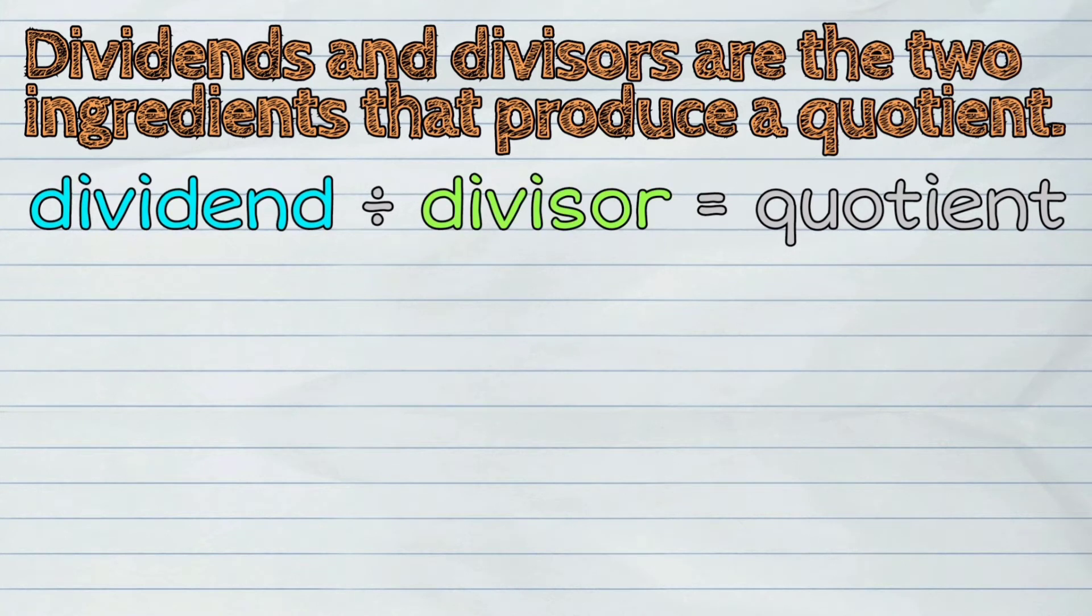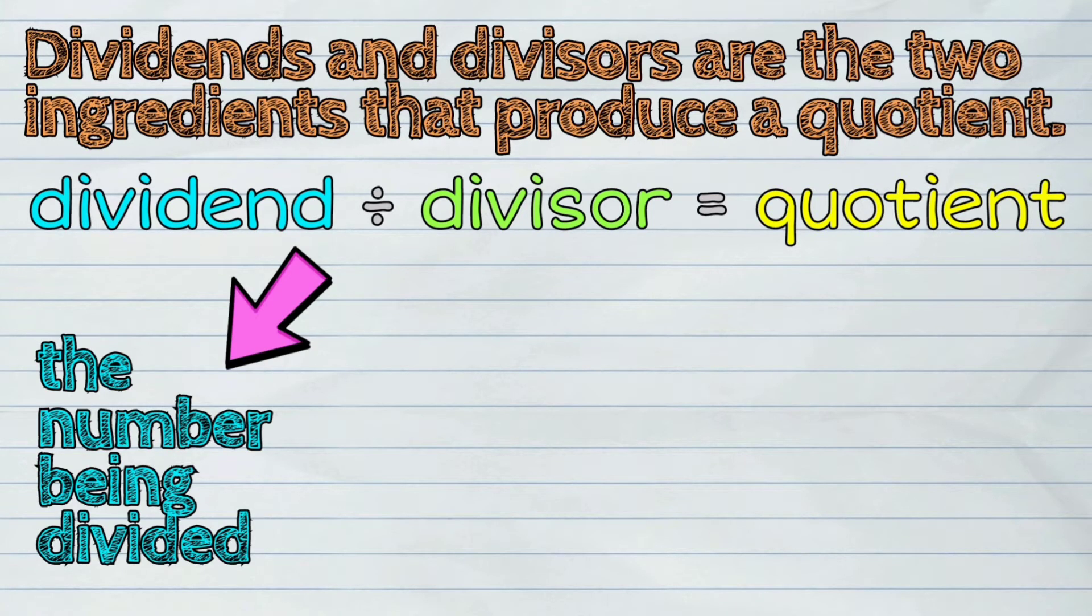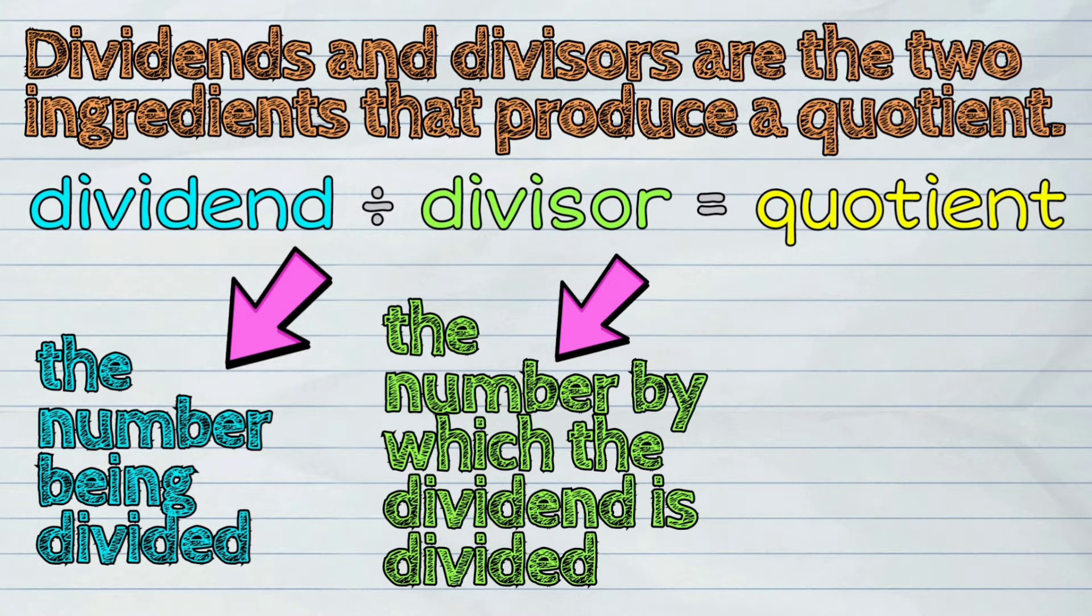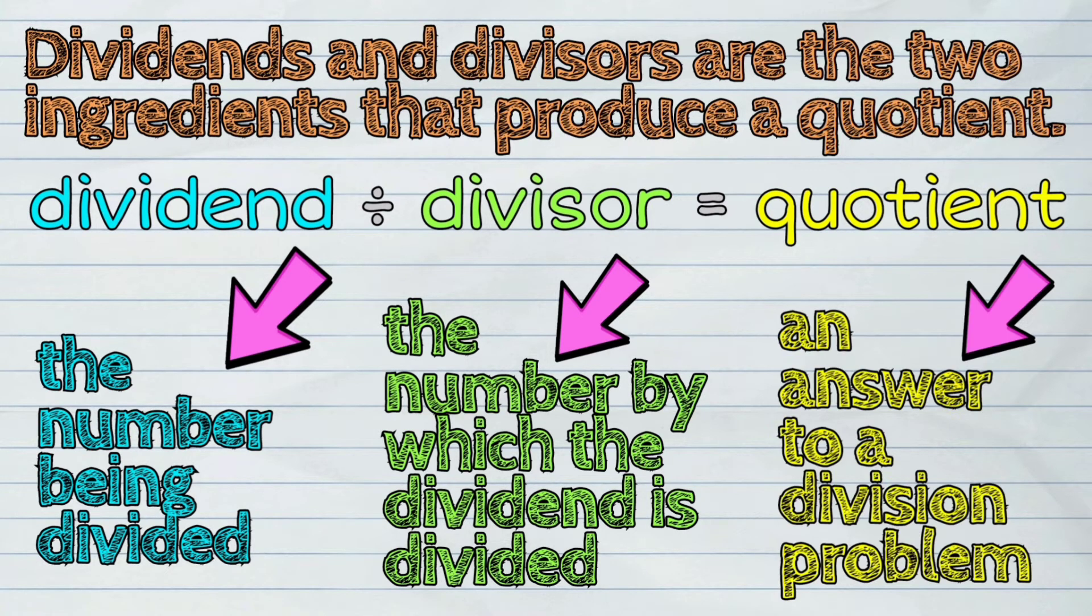Dividends and divisors are the two ingredients that produce a quotient. The dividend is the number being divided. The divisor is the number by which the dividend is divided. And a quotient is an answer to a division problem.